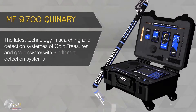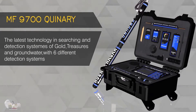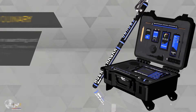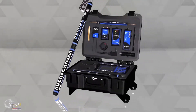In F9700 Queenery, the latest technology in searching and detection systems of gold, treasures, and groundwater with six different detection systems.